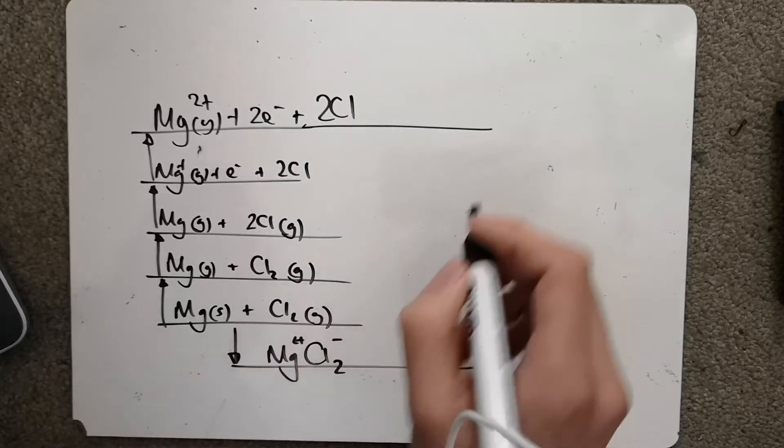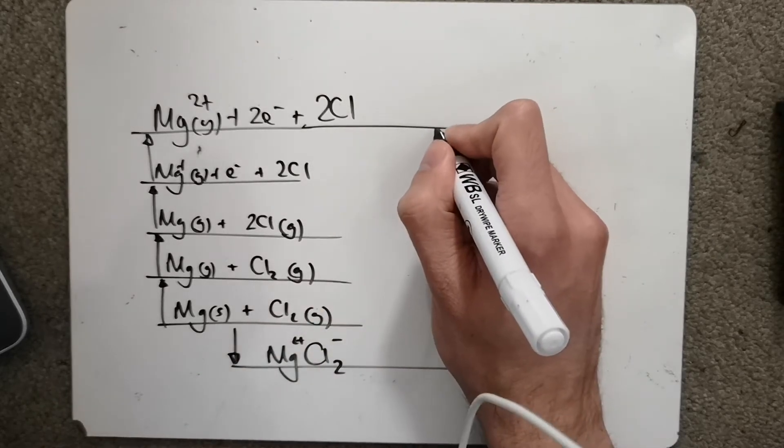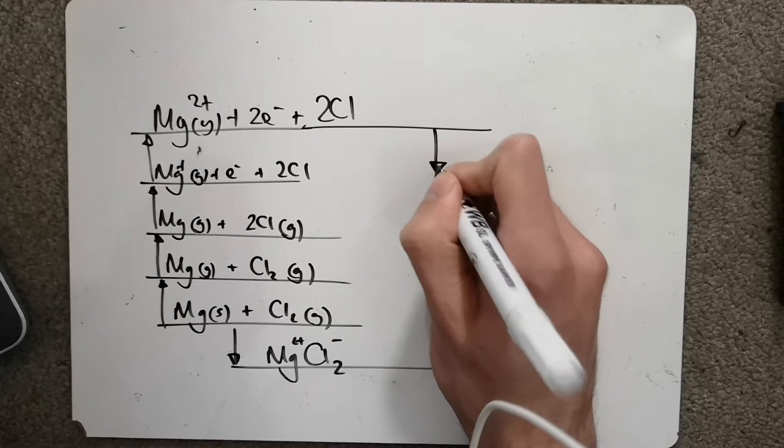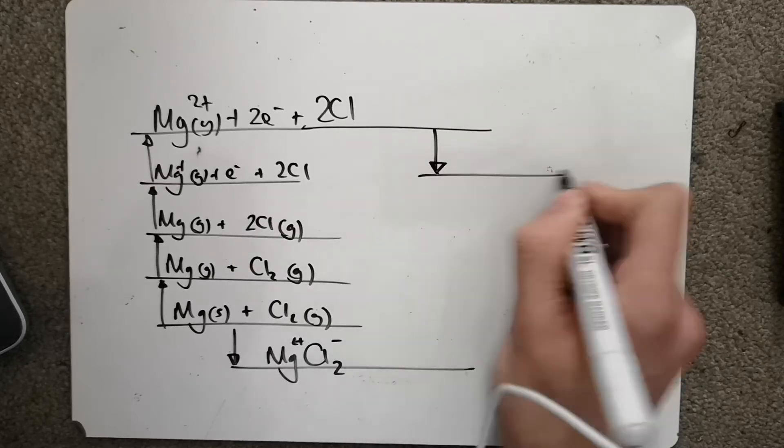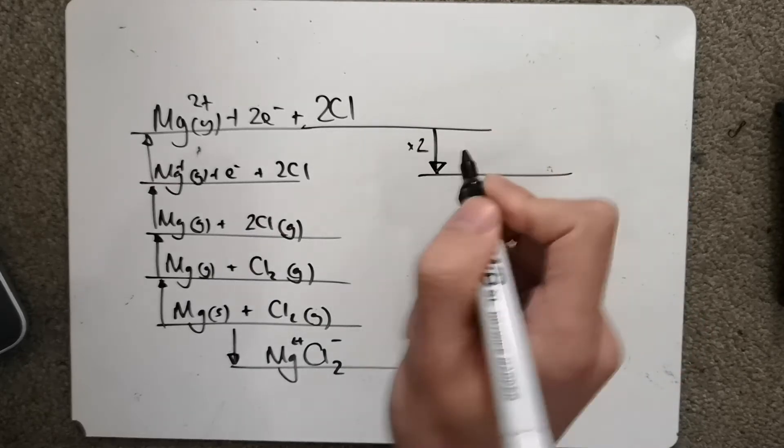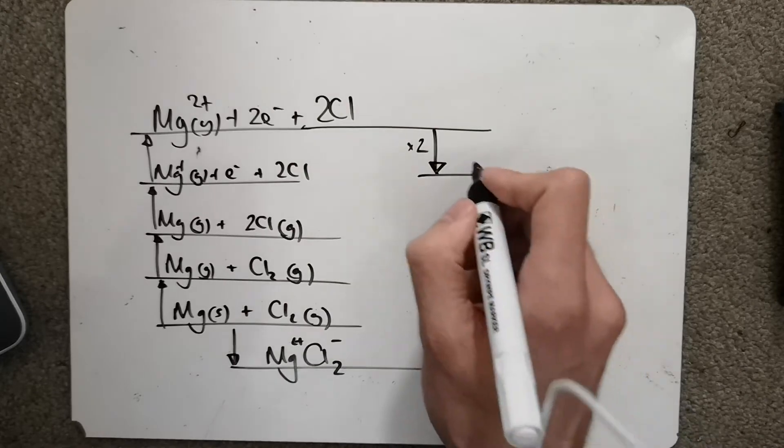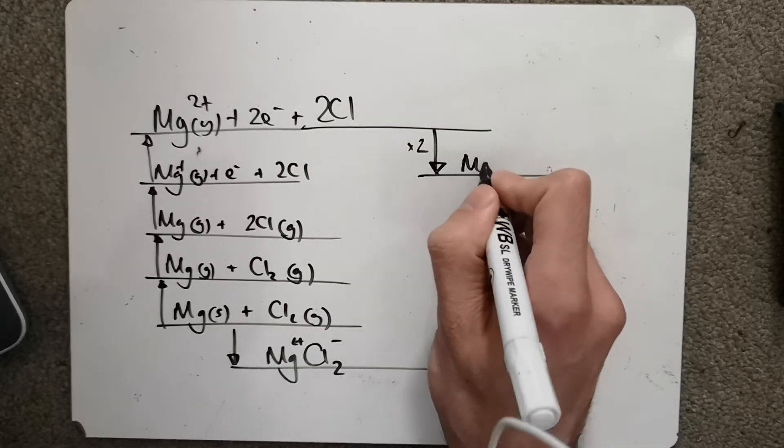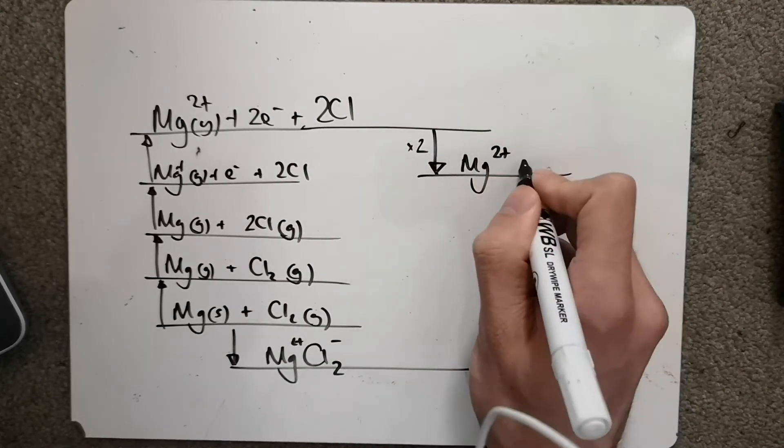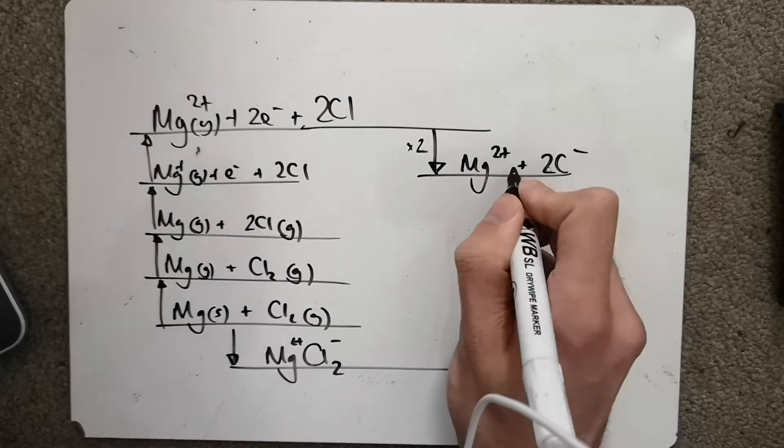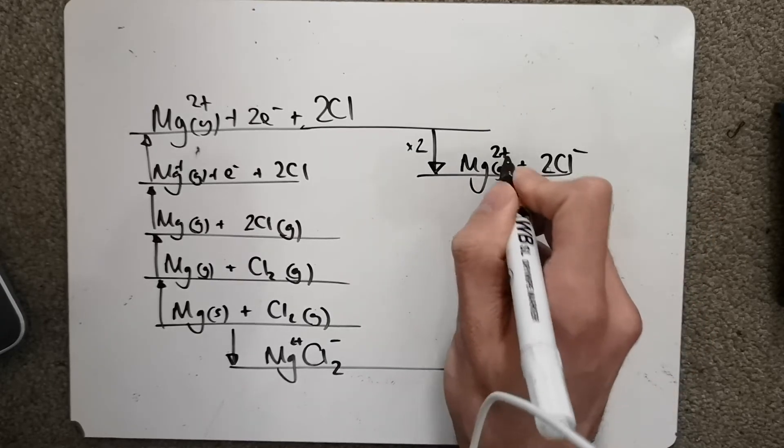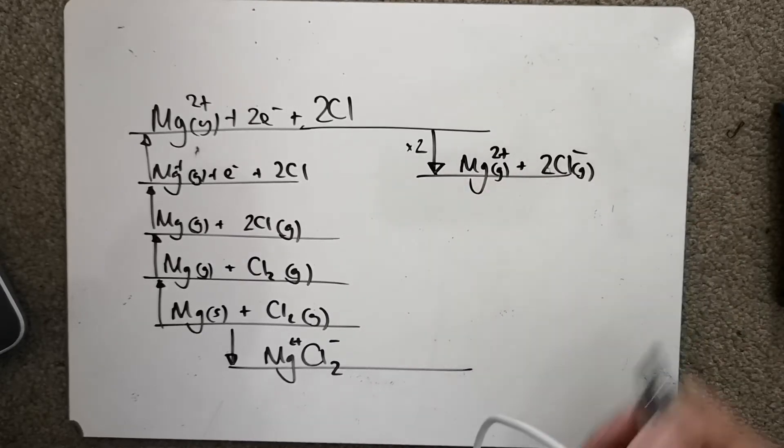After that, we've then got our ionisation energy, oh sorry, electron affinity of our chlorine. And this will be times two because we've got two chlorines, forming Mg2+ plus 2Cl-, each gaseous.